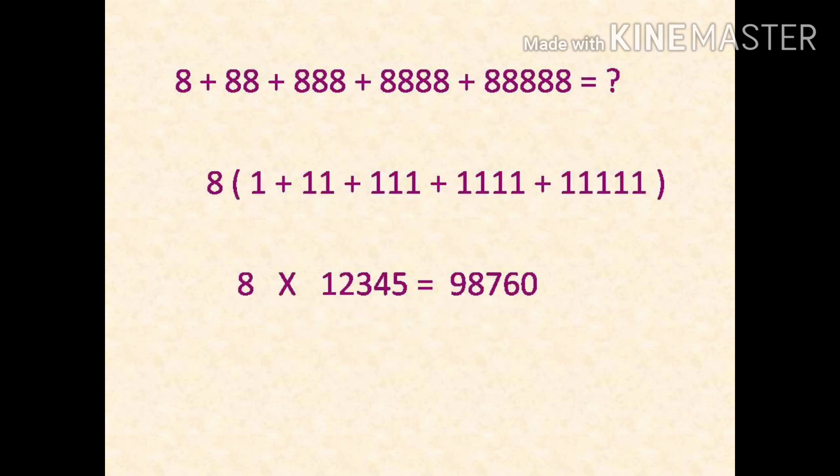You can apply this trick for more complicated problems also. Here we have a little bit complicated problem. Don't worry, just take 8 common outside, so we get only 1 inside the bracket. Just count the number of 1s. We get 8 into 1, 2, 3, 4, 5, that is 12,345. Just multiply that, and you get the answer 98,760.